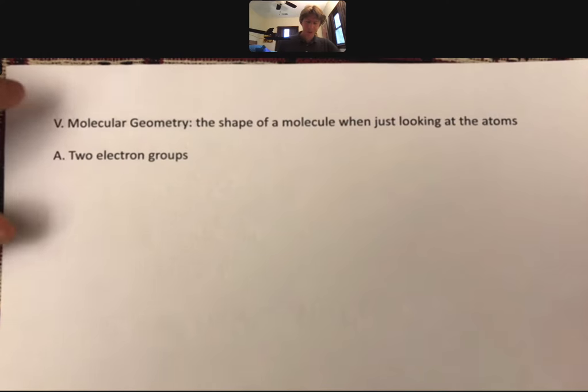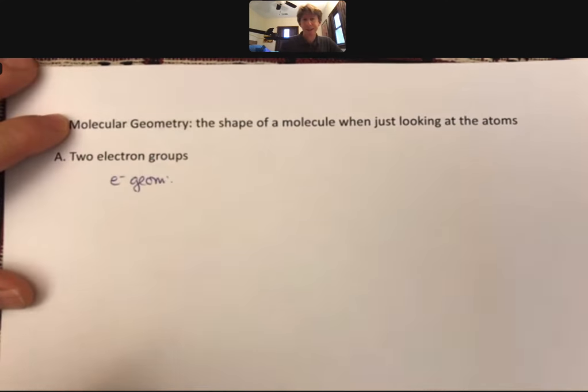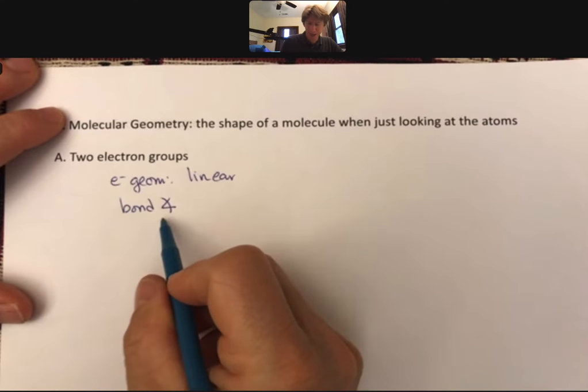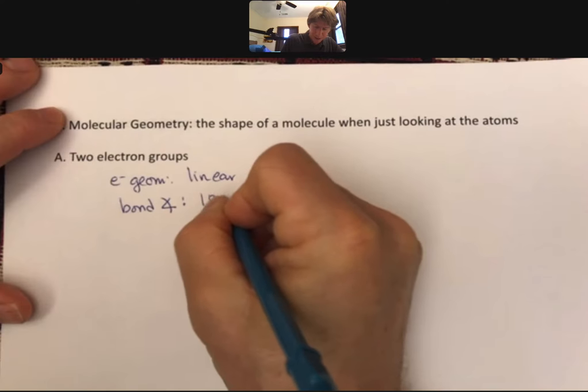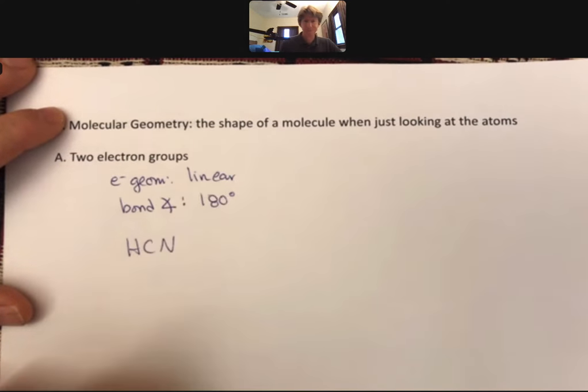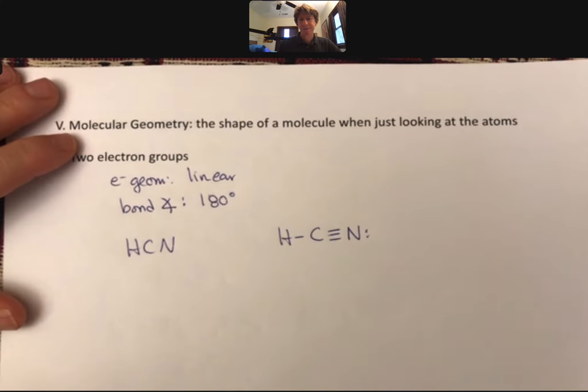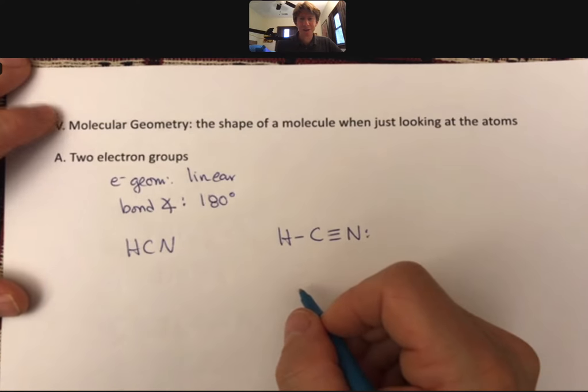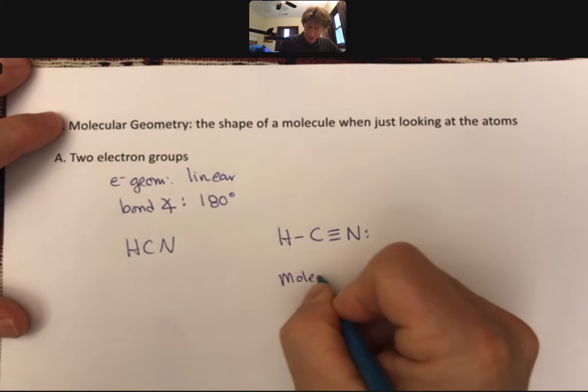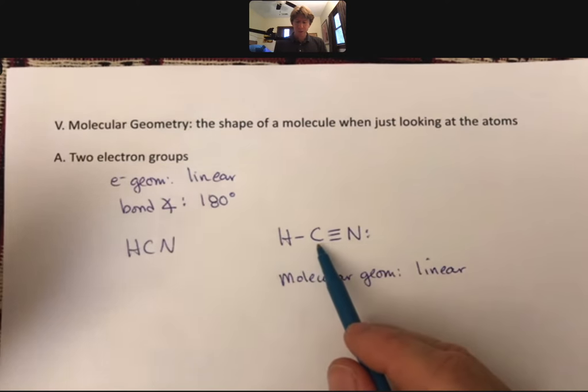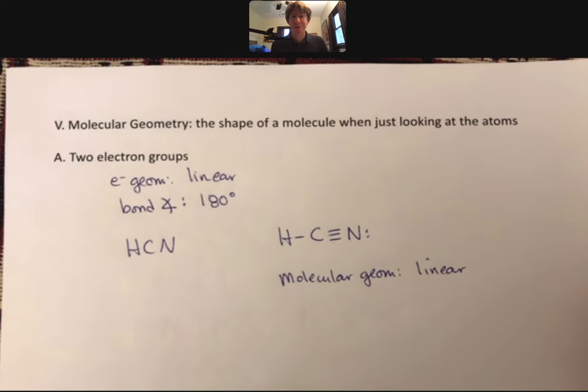Two electron groups. Remember our electron geometry is linear, our bond angle is 180 degrees, and we had an example of HCN. For HCN, we drew the Lewis structure like this, and molecular geometry is easy for this. The only molecular geometry is also called linear, because in order for it to have two electron groups, both of them have to be atoms, and so there's no possibility of having an electron pair in the central atom for this.